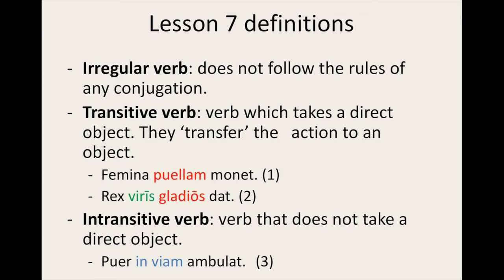As you would expect, an intransitive verb is one which does not take a direct object. In example 3, puer in viam ambulat — 'the boy walks into the street.' Into the street tells us where the boy performed the action; it is not receiving the action. Walking, falling, crying, sleeping, sneezing, flying are intransitive.